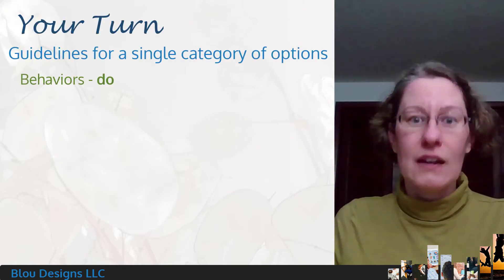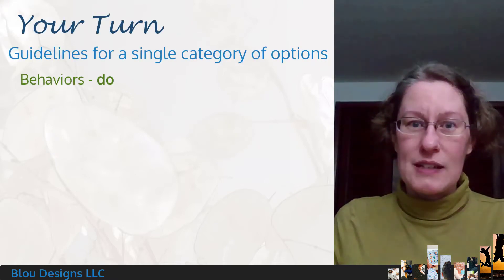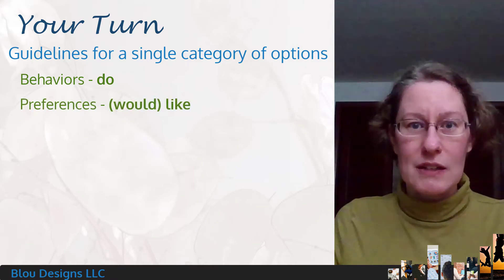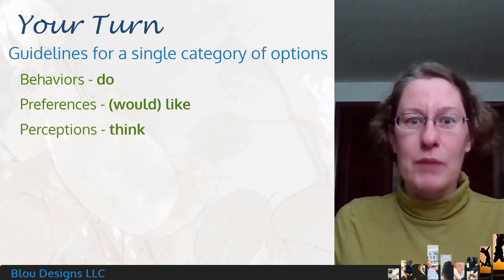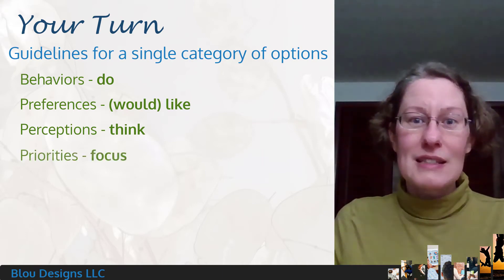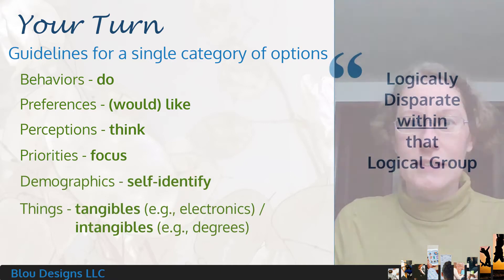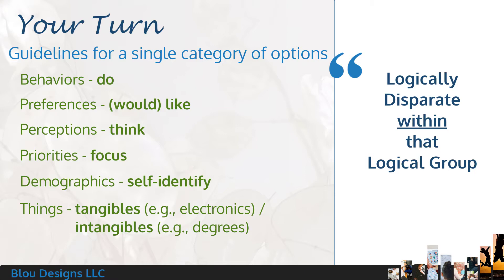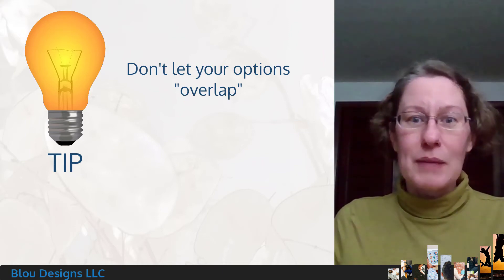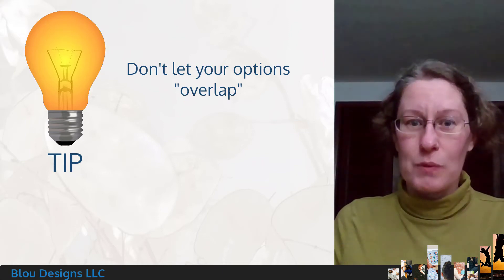Are your options going to be behaviors, like what respondents do in their free time? Preferences, like the topics your respondents would like you to address in a podcast or speaker series? Perceptions, like the types of marketing your respondents think they need to sustain or grow their businesses? Priorities, like where your respondents want to focus their efforts? Or maybe some other single category. You also need your checkbox options to be logically disparate within that logical group — a good range of options to cover your bases, but without overlap that makes it hard for respondents to figure out which options to select.